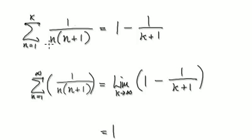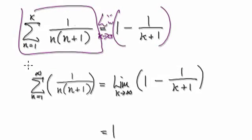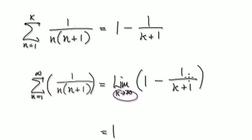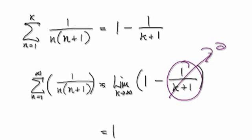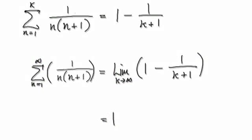When you take the limit as k tends to infinity on this thing here, it becomes this. As k tends to infinity, 1 divided by a very very large number goes to zero, so this whole thing here will be 1. When you sum it from 1 to infinity, it will give you 1. So your final answer is 1.